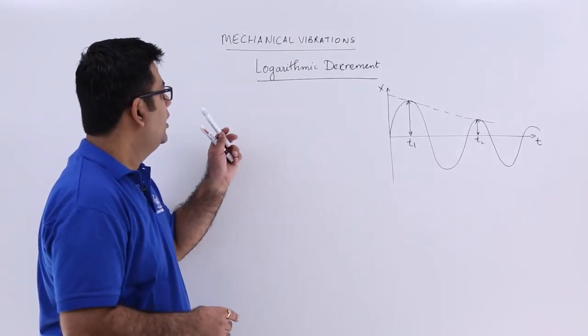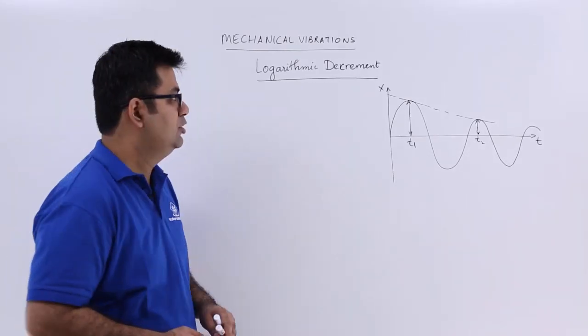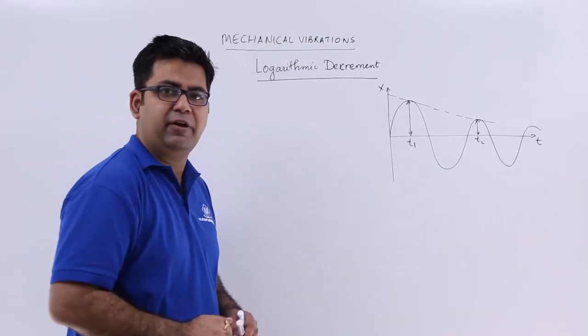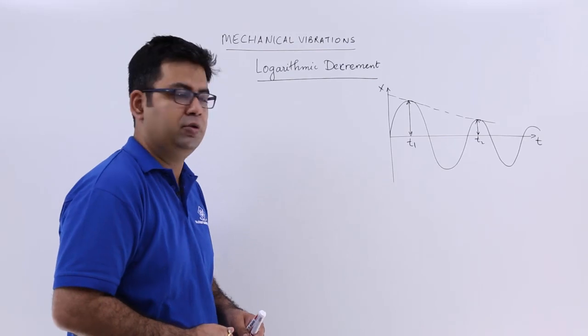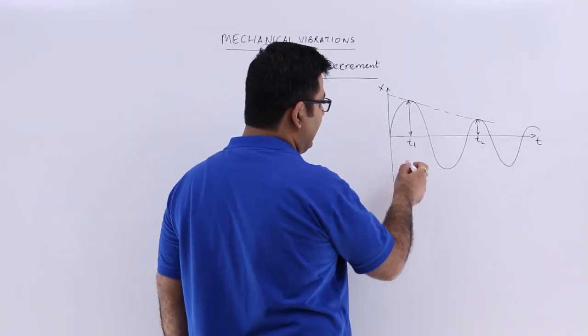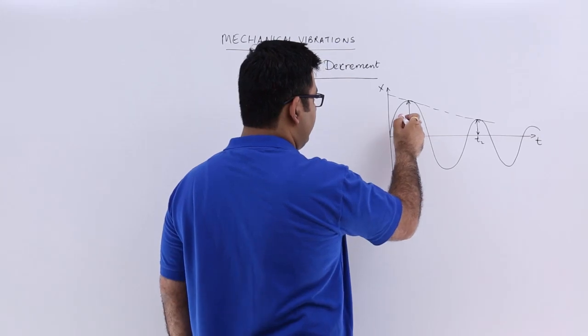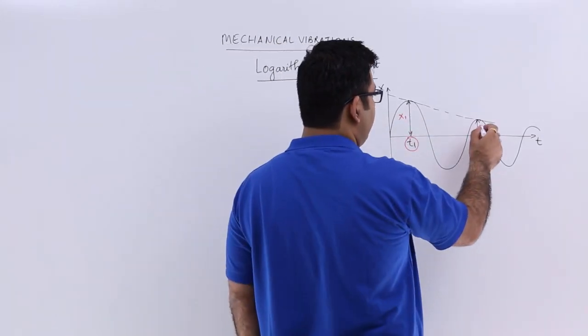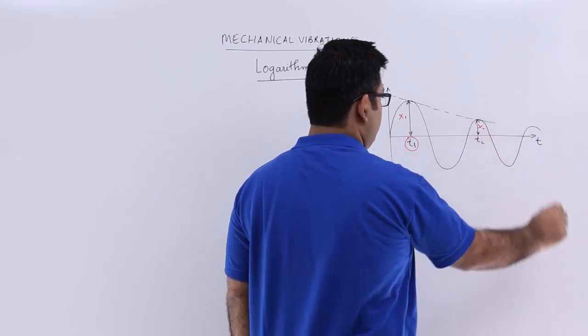Now let us talk about logarithmic decrement. This is a very common displacement-time diagram. You have this periodic motion shown to you. Let's say at time t₁ the displacement is x₁, and at time t₂ the displacement is x₂.